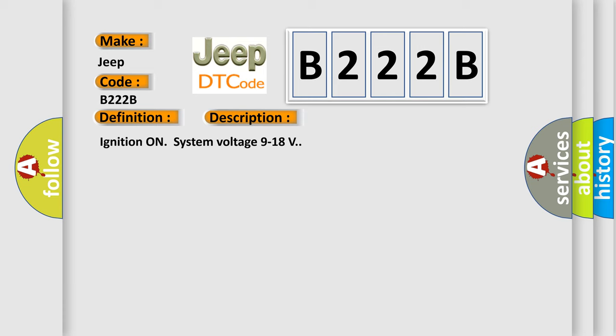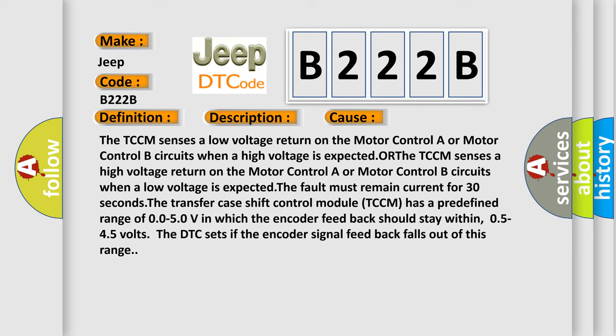This diagnostic error occurs most often in these cases: The TCCM senses a low voltage return on the motor control A or motor control B circuits when a high voltage is expected, OR the fault must remain current for 30 seconds. The transfer case shift control module (TCCM) has a predefined range of 0.050V in which the encoder feedback should stay within.